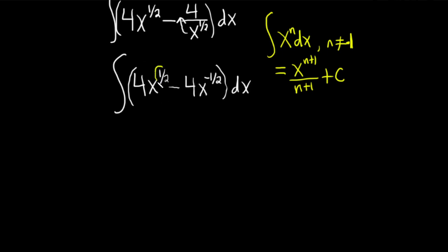So this is our n. So we're going to take one and we're going to add it to one-half. So one-half plus one is really one-half plus two-halves. So it's three-halves. So now we drop the integral sign. So this is four x to the three-halves. Then we divide by three-halves. So divide it by three over two.